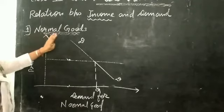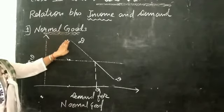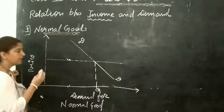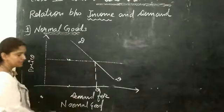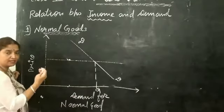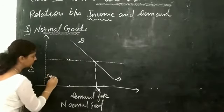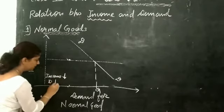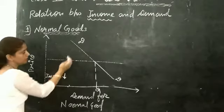For normal goods there is a positive income effect. This means if the income of the consumer falls, then the demand for these goods also falls. If income decreases, then demand also decreases.